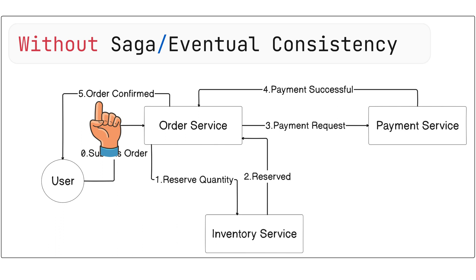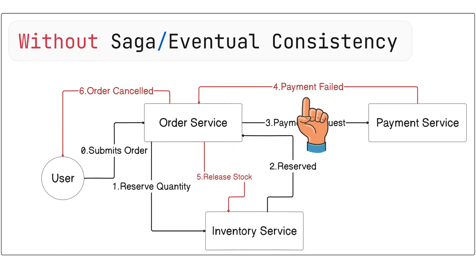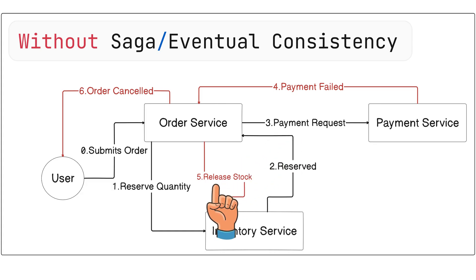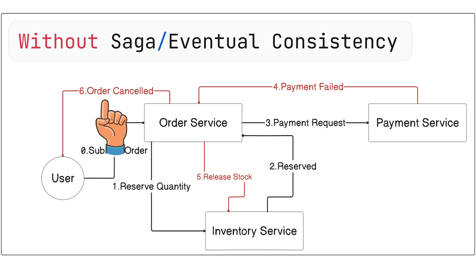If payment fails due to any issue — such as insufficient balance or card declined — then the order service takes responsibility to roll back all the previous steps. That includes the stock reservation done in the inventory service, so the order service will call the inventory service and release those stocks back again. Once that is done, the order service marks the order as failed and responds with an appropriate error to the user.